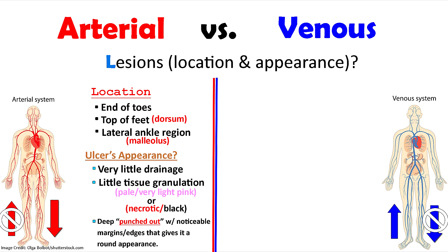First, let's talk about arterial ulcers. With arterial ulcers, there's an issue with the peripheral arteries being able to supply the extremities. Signs and symptoms of an arterial ulcer tend to be found in the lower extremity below the kneecap. There's an issue with blood flow — that rich oxygenated blood being able to get to and perfuse those extremities is being blocked, so signs and symptoms will be related to ischemia.